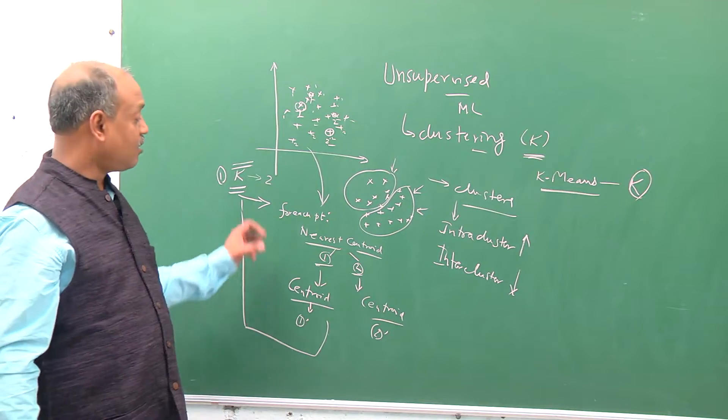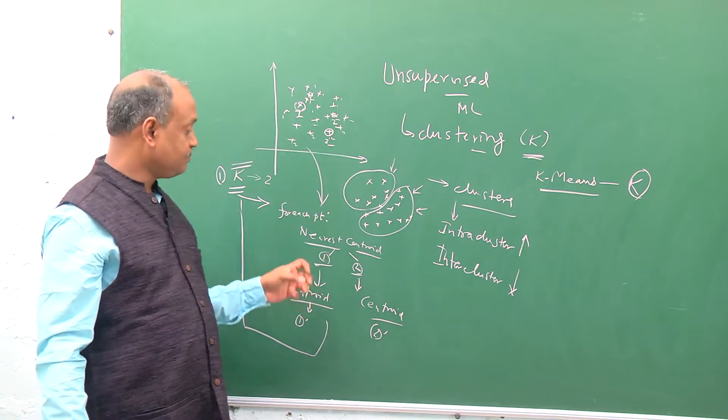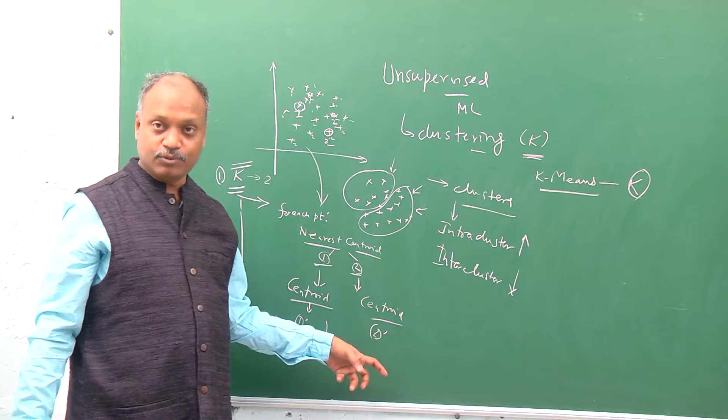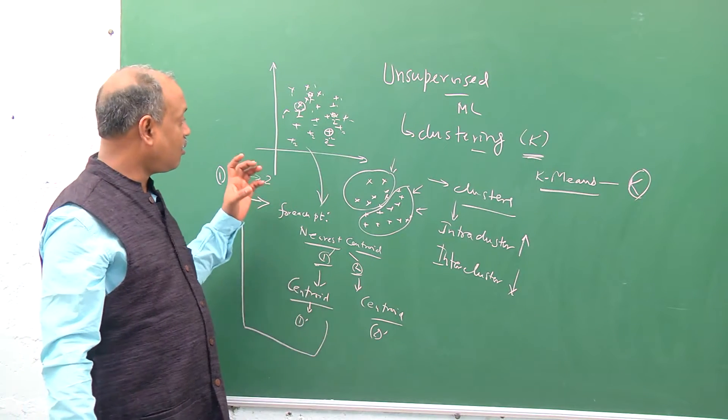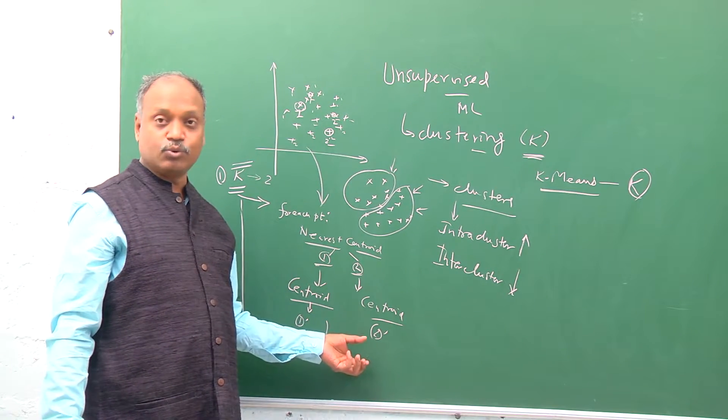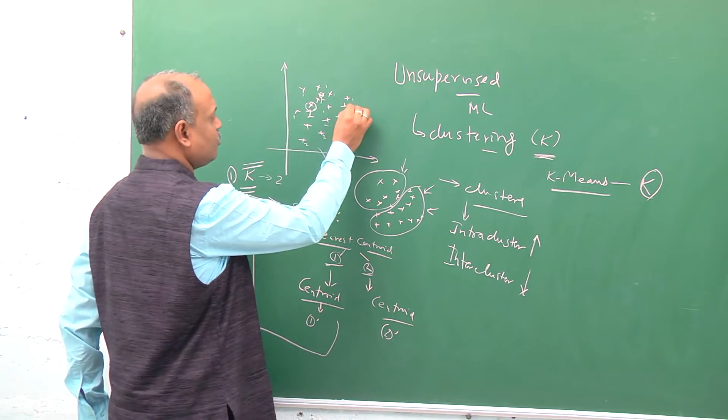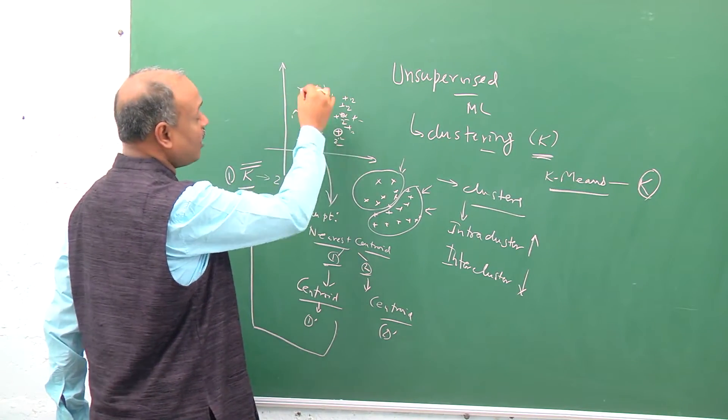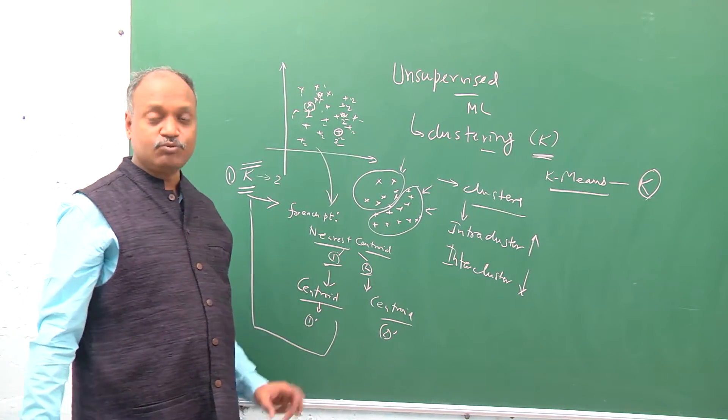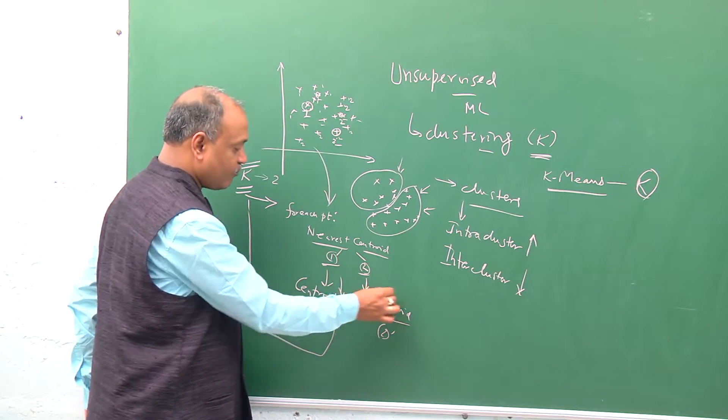Take the original set of all points with the two centroids one dash and two dash. Find out which point is nearest to one dash or two dash. If it is nearer to one dash, rename it as cluster one. If it is nearer to two dash, rename it as cluster two. So now we have probably some rearrangement. Some points will move from one cluster to the other. Now what happens is we have changed the cluster formation to a new formation. Now again, we compute the centroid of the new assignment.